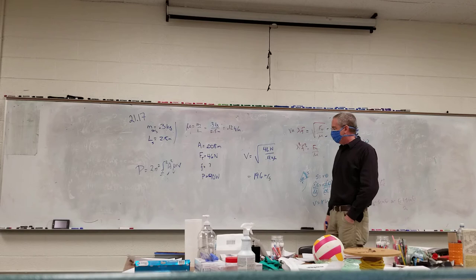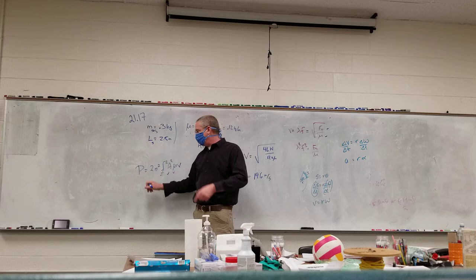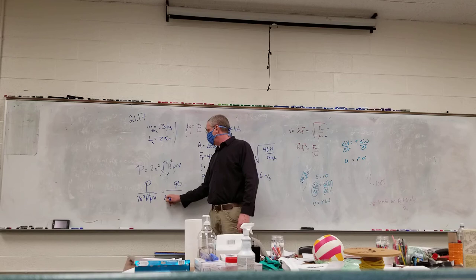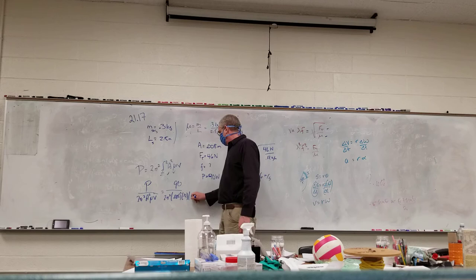Now it's a matter of solving for frequency. Since frequency is linked by multiplication, I divide everything else over. I get frequency squared equals power over 2π² times amplitude squared times μ times v. So that's 90 over 2π² times 0.008², times 0.12, times 19.6. Then take the square root to get frequency.